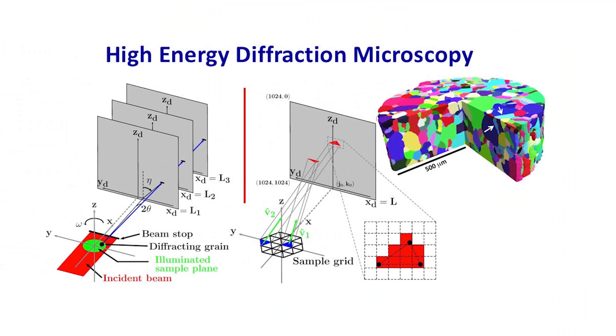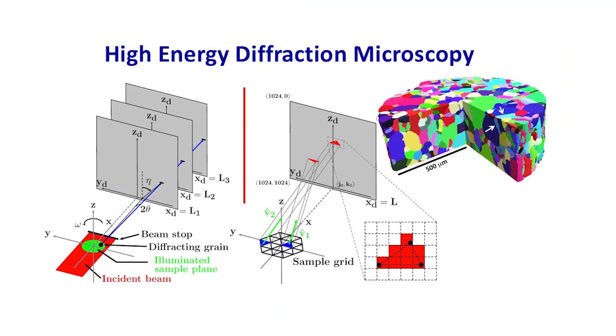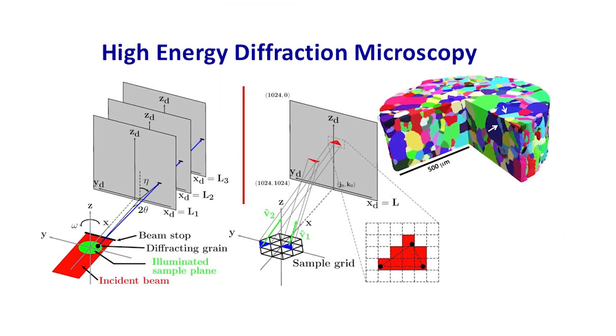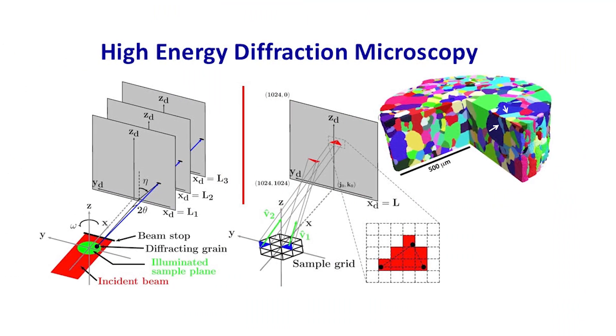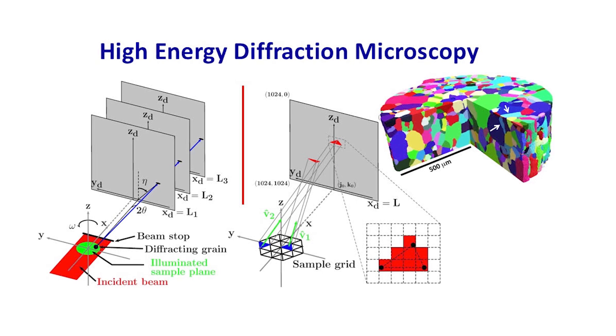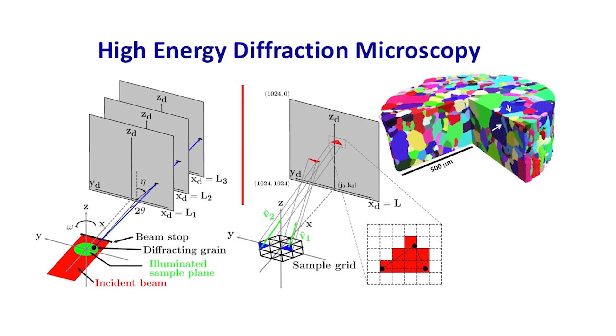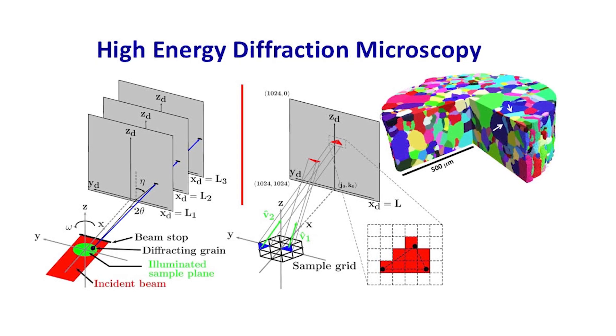What we did is we used a very new technique called high energy diffraction microscopy. It's an x-ray microscopy technique that allows us to look inside the material and image these grain boundaries. We recently made measurements about how the grain boundaries move at high temperature.